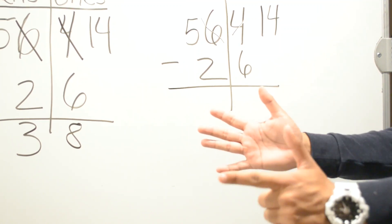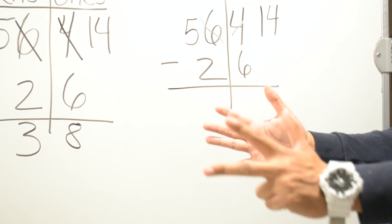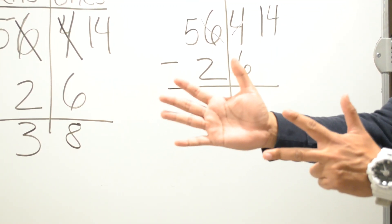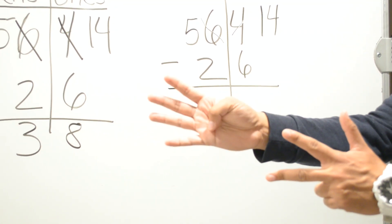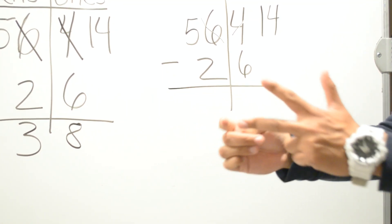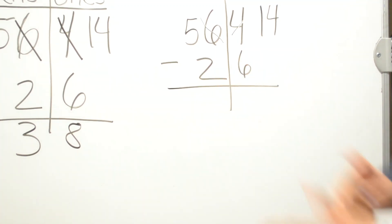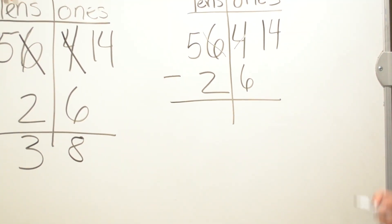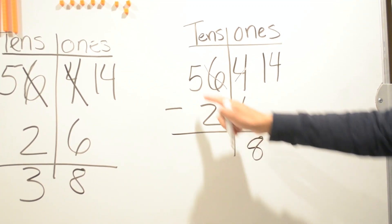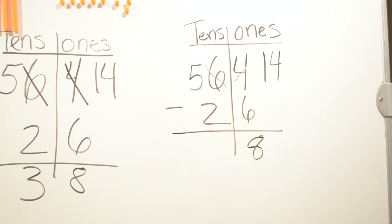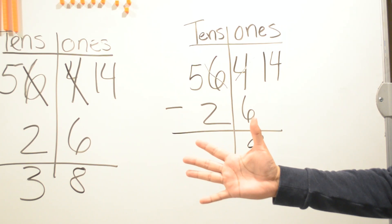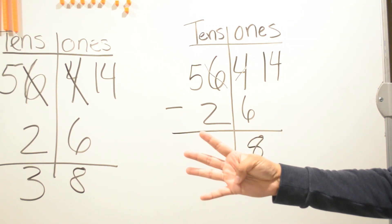...twelve, thirteen, fourteen. Now we count how many fingers we have up: one, two, three, four, five, six, seven, eight. Then we do five minus two — we have five and we take away two: one, two — now we have three.